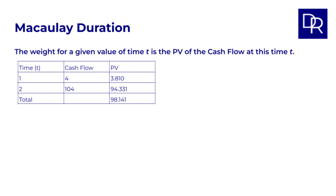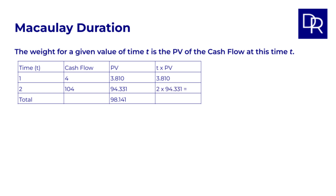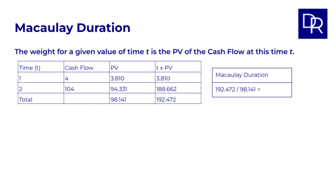We now have all the information we need to calculate the Macaulay duration. We multiply the values for t — the time in years to the cash flows — by the PV of the cash flows occurring at that time t. So for t equals 1, we have 1 times 3.81, so 3.81. And for t equals 2, we have 2 times 94.331, so 188.662. We add up these two values, which gives 192.472, and then we divide this by the total PV, so 98.141, giving us 1.961. So for this bond, the Macaulay duration is 1.961.